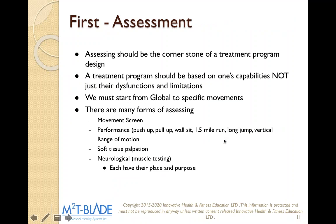Assessment should be the cornerstone of a treatment program — based on one's capabilities, not just their dysfunctions and limitations. We want to see what somebody can do and what they're restricted at. We start from a global to specific movement, always starting with squatting and lunging — movements we do every day. There are many forms of assessing: functional movement screening, performance, range of motion, soft tissue palpation, and neurological.